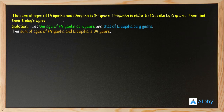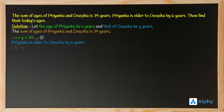The sum of their ages is 34, so the first equation is x plus y equals 34. Age of Priyanka plus age of Deepika gives us 34. From the second condition, Priyanka is elder to Deepika by 6 years, so the second equation is x minus y equals 6.